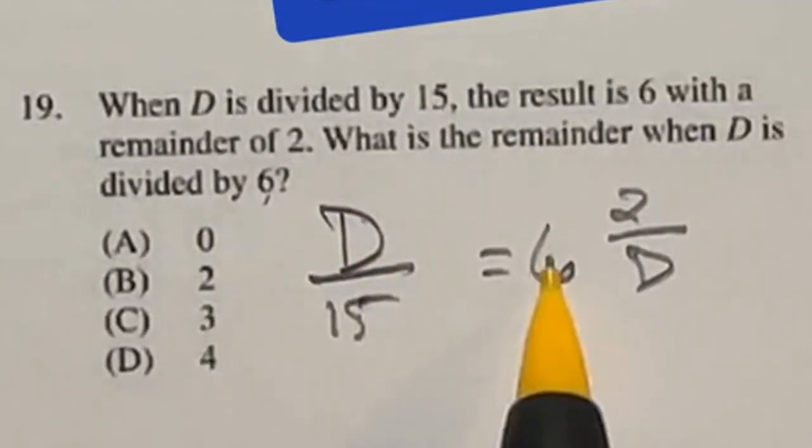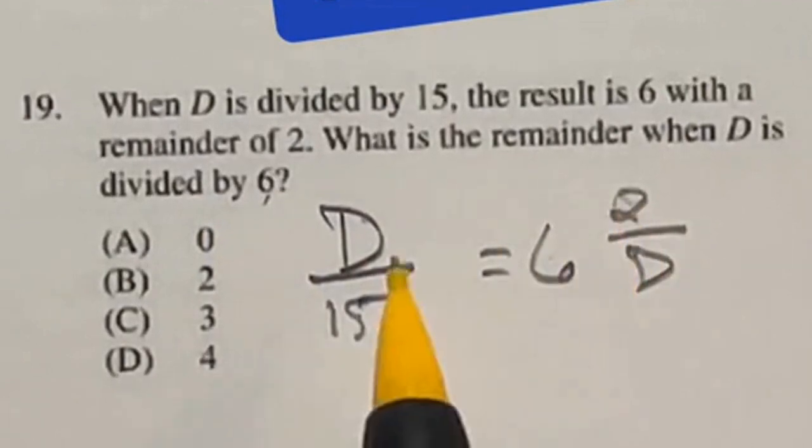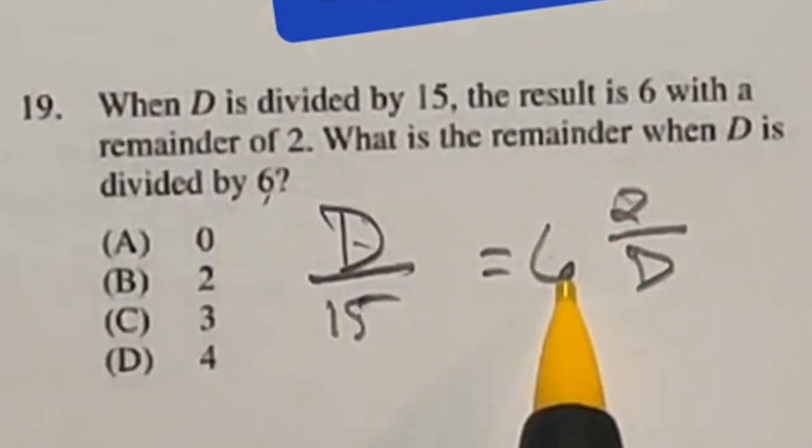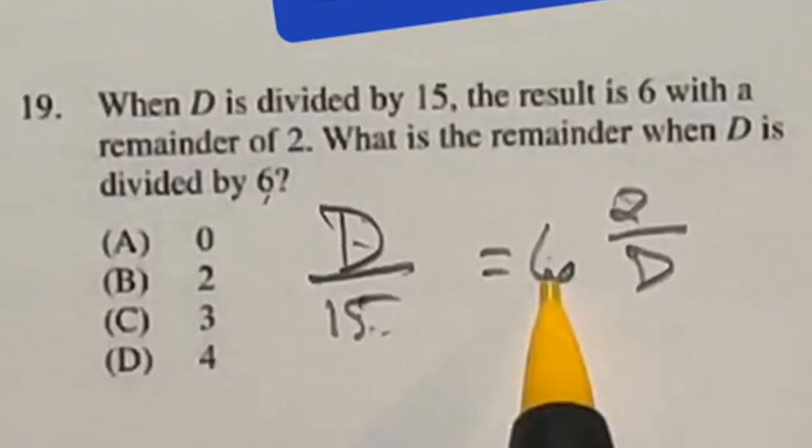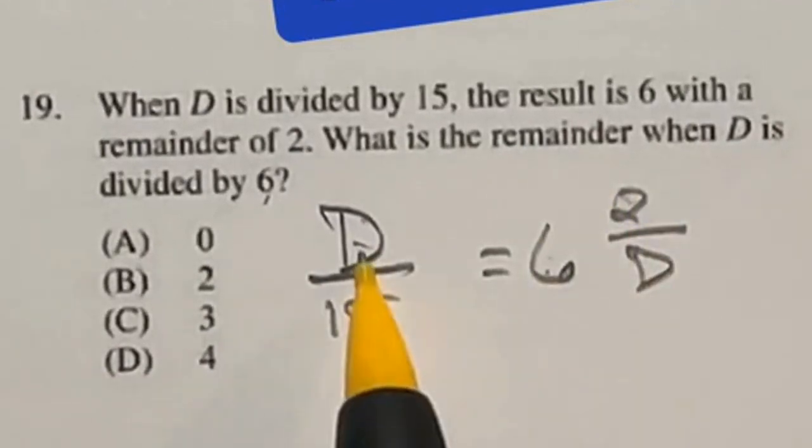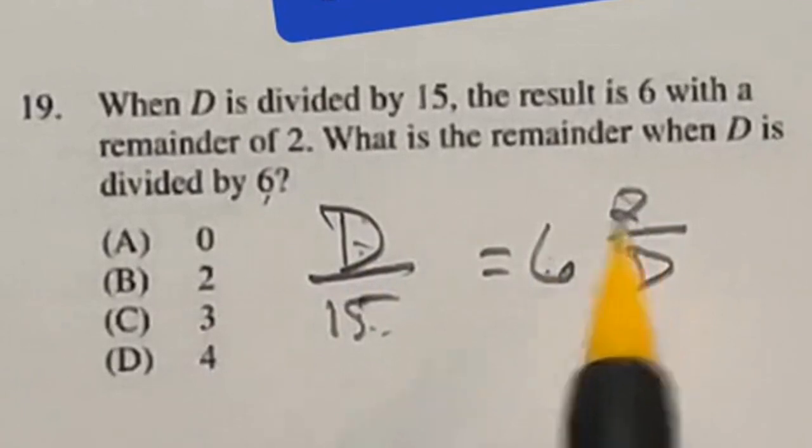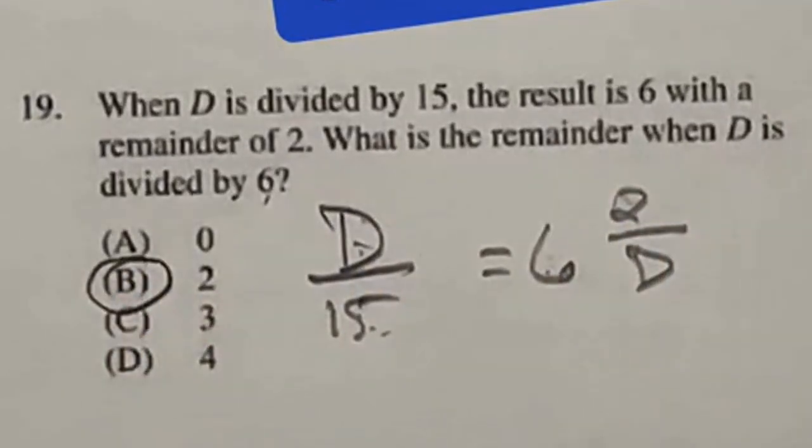Well, if D divided by 15 is 6 plus that 2, then that means D divided by 6 would just be 15 plus that same 2 because 15 times 6 plus the 2 right here gives us D. So our answer should be that the remainder stays the same as 2, which is B.